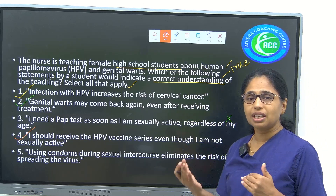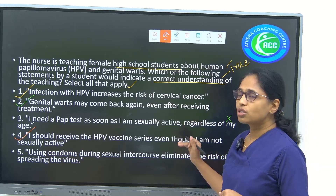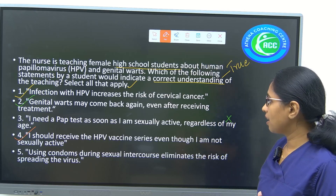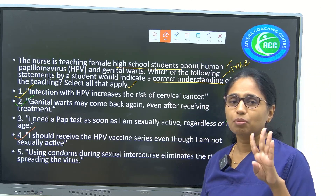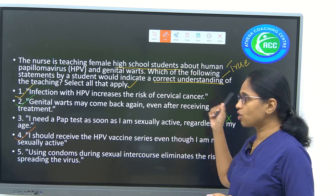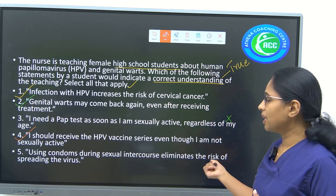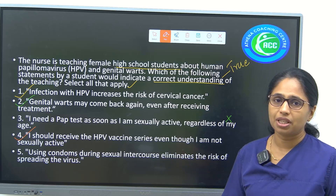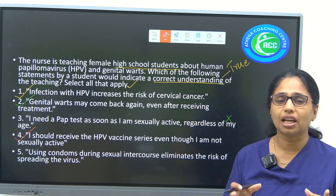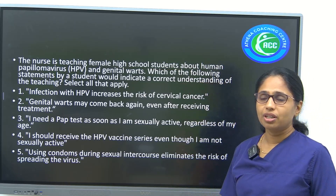The spreading tendency of HPV increases depending on immunity status. Option 5 is wrong because condoms do not completely eliminate the risk. The correct answers for this question are options 1, 2, and 4. Option 3 is wrong because of 'regardless of age,' and option 5 is wrong because condoms cannot 100% eliminate the virus spread.